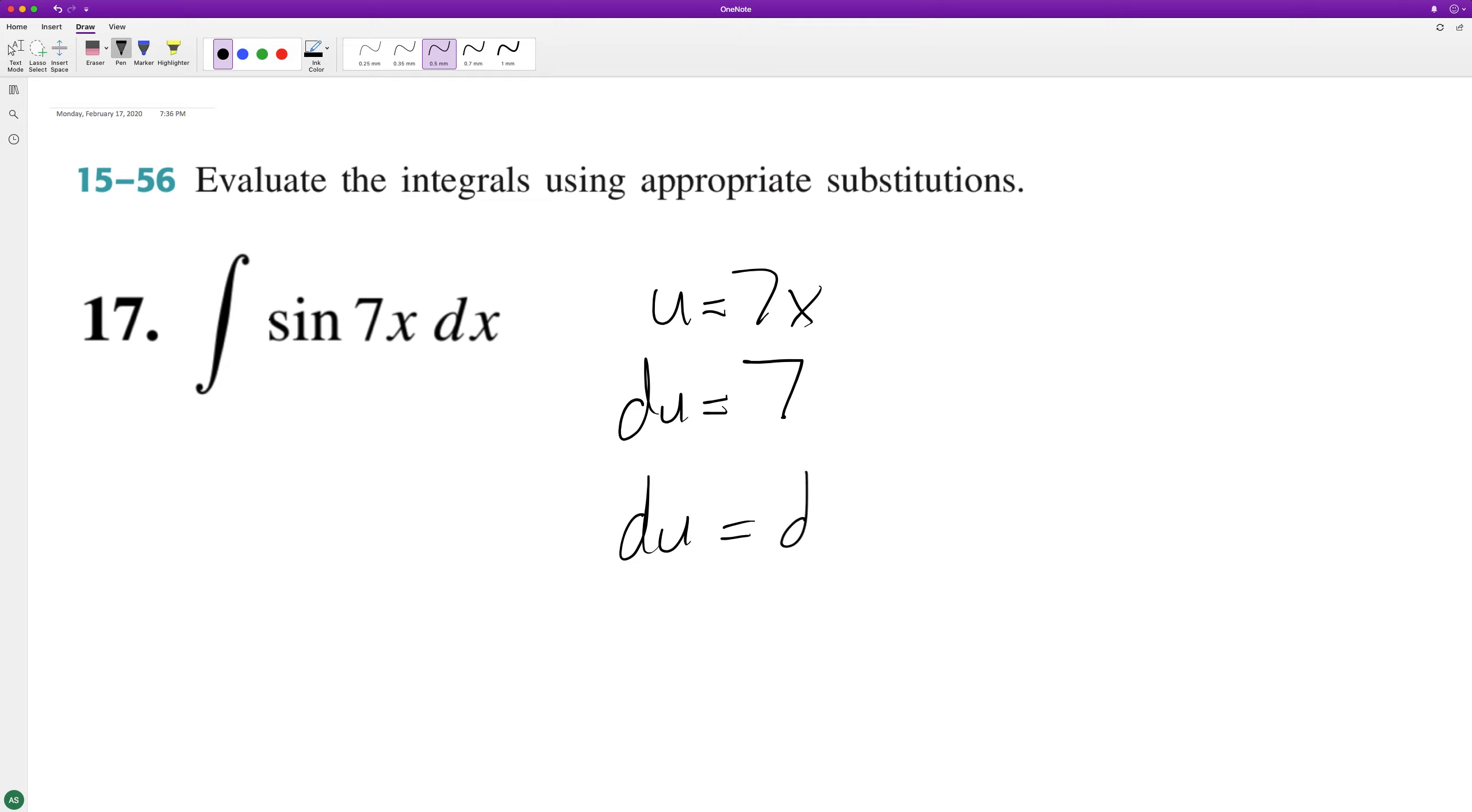To get du equal to dx, we need to multiply by 1/7. So we'll have 1/7 integral of sine u dx, and the integral of sine u is equal to negative cosine u plus C.